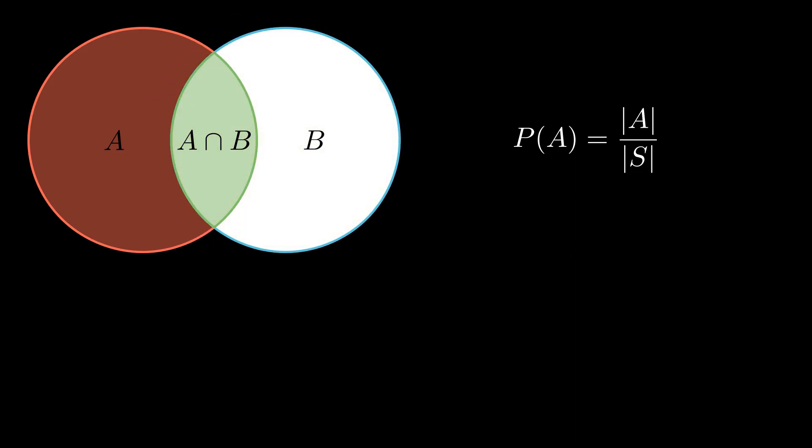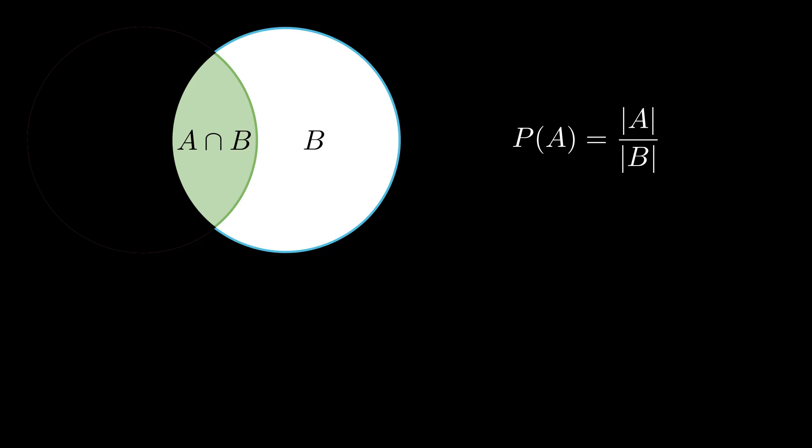Also, we can discard the outcomes that are not in new sample space. What's left is the outcomes that are in both A and B, which is nothing but the intersection of A and B. That's how we get the formula for conditional probability.